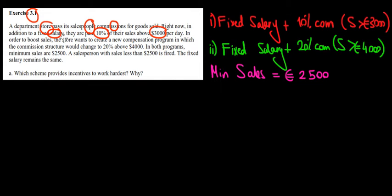To increase sales, the store wants to create a new compensation scheme where workers would still get their fixed salary, but the commission would be 20% above $4,000. In both programs, the minimum sales are $2,500. If they sell less than that, they are fired.